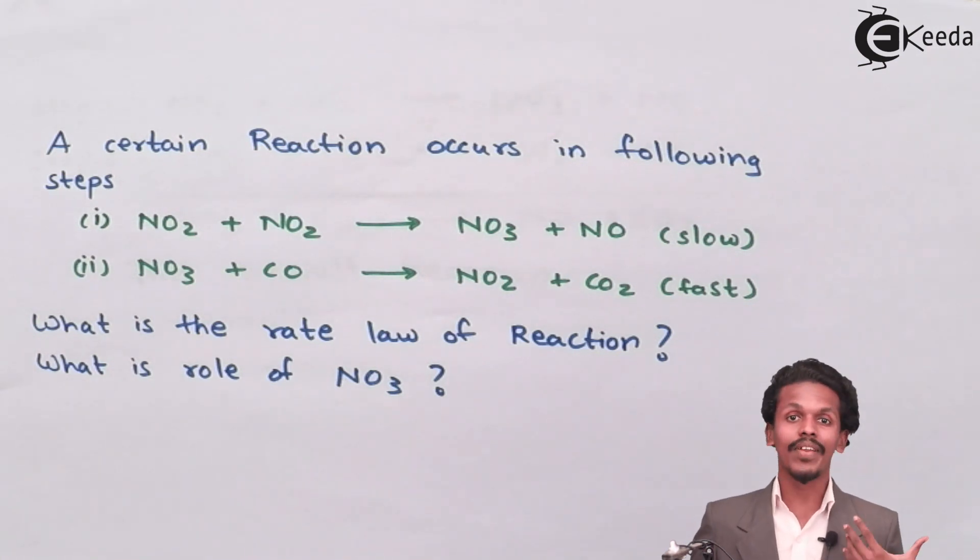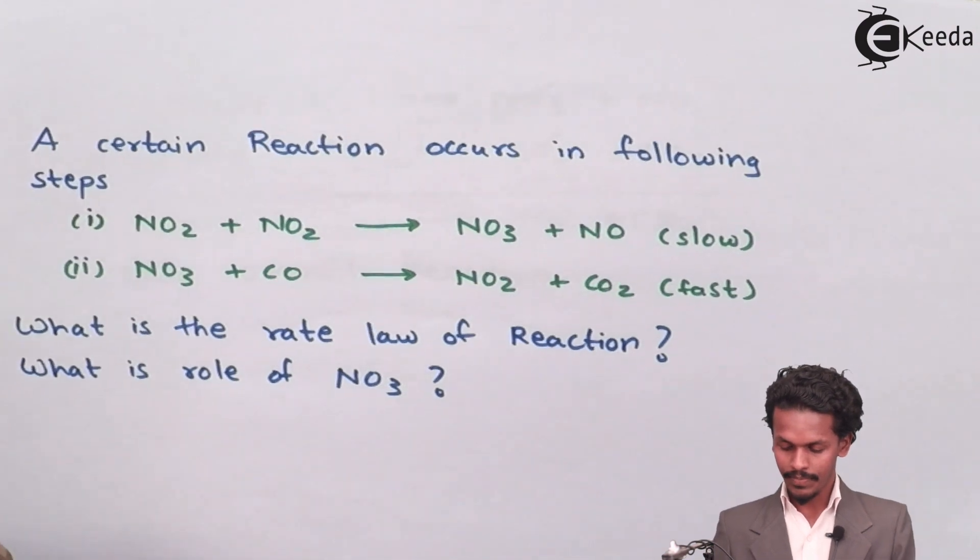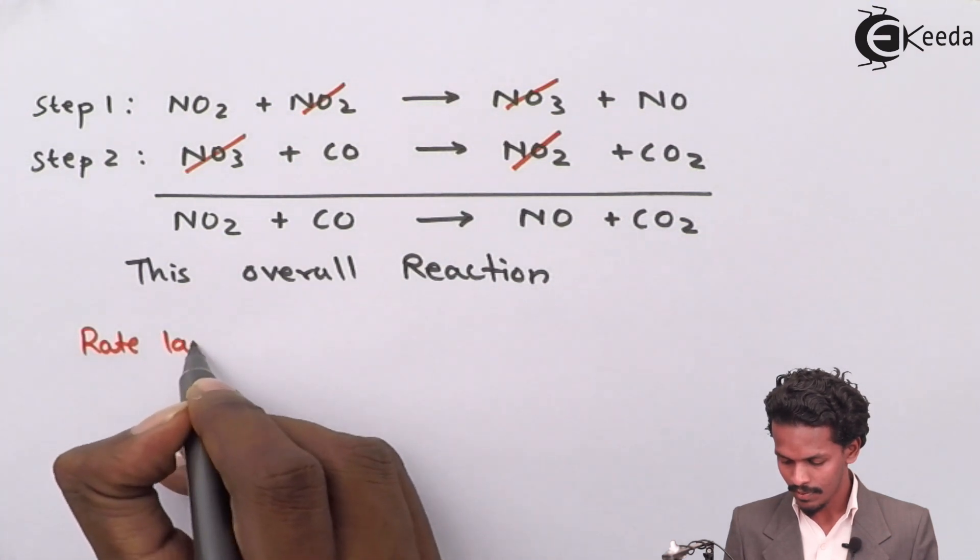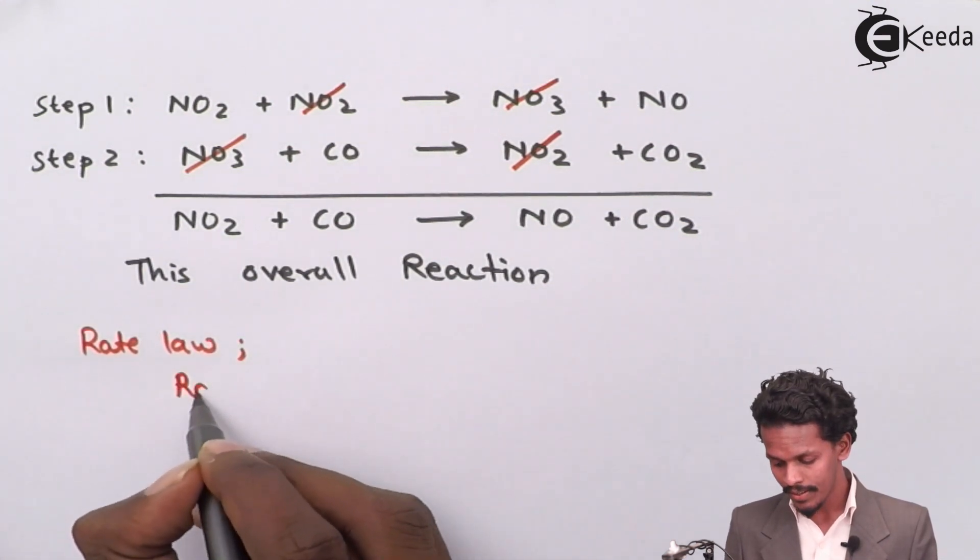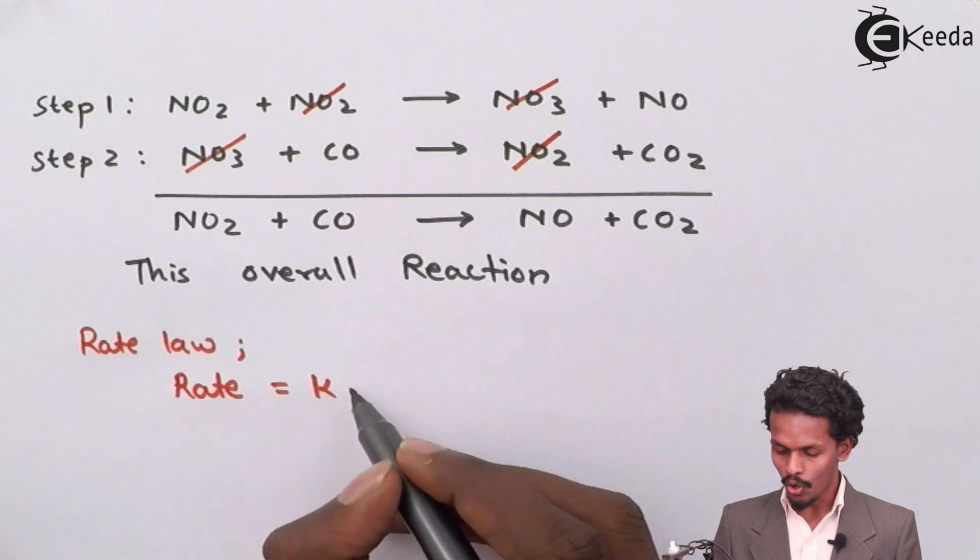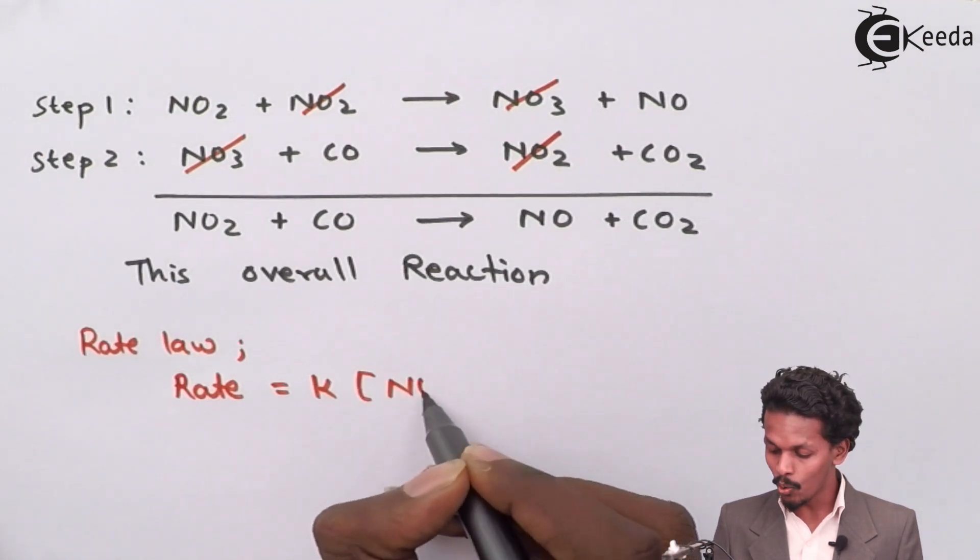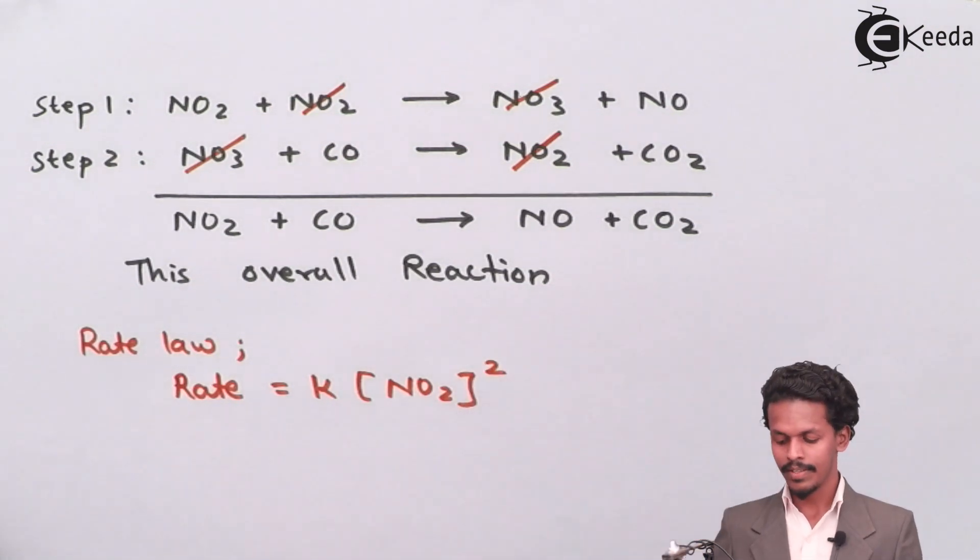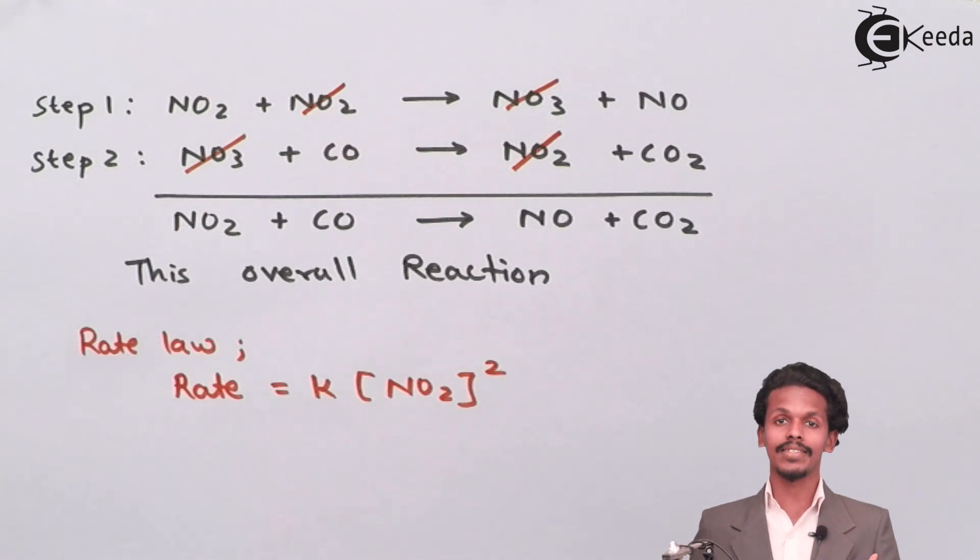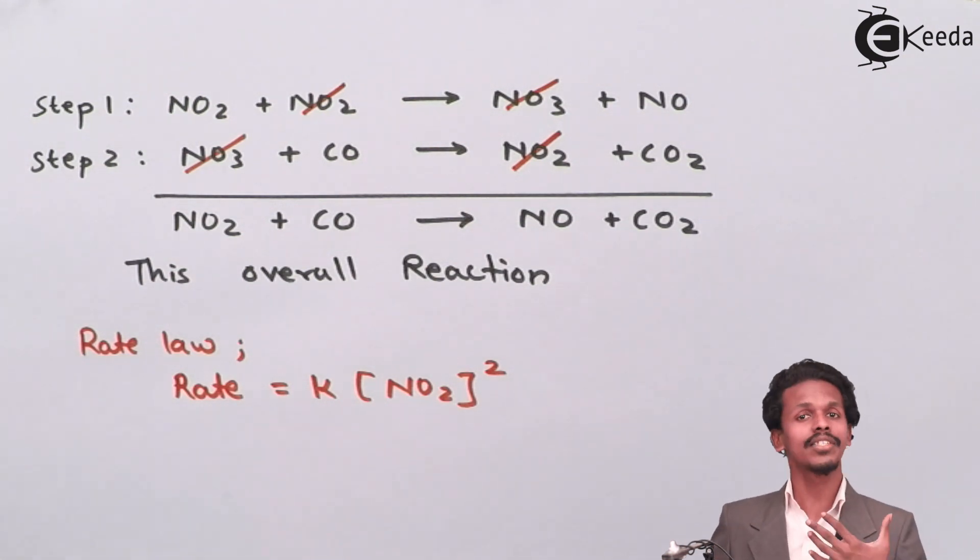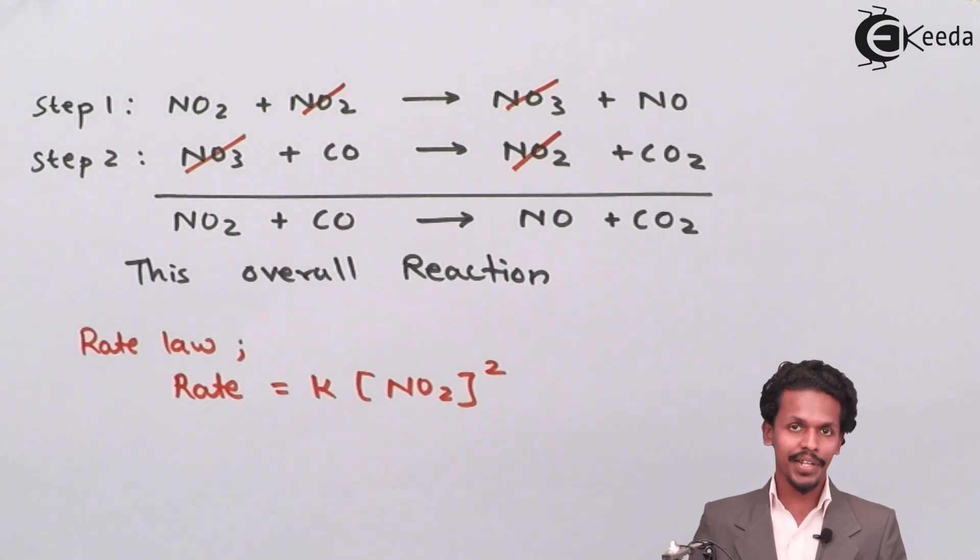Therefore, the rate law can now be written as: the overall rate is now equals to K times NO2 squared. By this, I can say the overall reaction is a second-order reaction, because in this case the value of X is 2 and there has been no mention of Y, so Y is 0. Therefore, it is a second-order reaction.